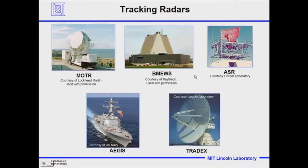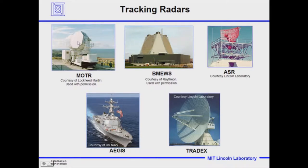Just about every radar has this tracking function, be it ground-based range tracking radars, radars that track ballistic missiles, air traffic control radars, or radars on ships that do air surveillance. They all perform this tracking function. Some of these radars are phased array radars and some have mechanical scanning dishes. This particular radar is a combination of electronic scan and mechanical scan in azimuth and elevation, and it's a lens radar with tracking techniques within it.